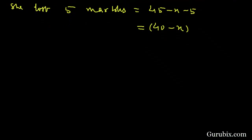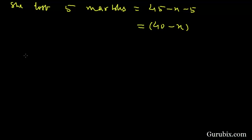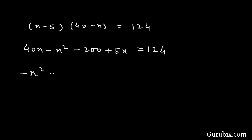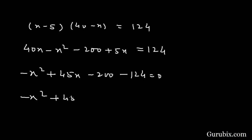The next condition of the statement is that the product of the marbles they now have is 124. This means if we multiply x minus 5 with 40 minus x, it equals 124. Expanding these two binomials: 40x minus x squared minus 200 plus 5x equals 124, which simplifies to minus x squared plus 45x minus 200 minus 124 equals 0, giving minus x squared plus 45x minus 324 equals 0.